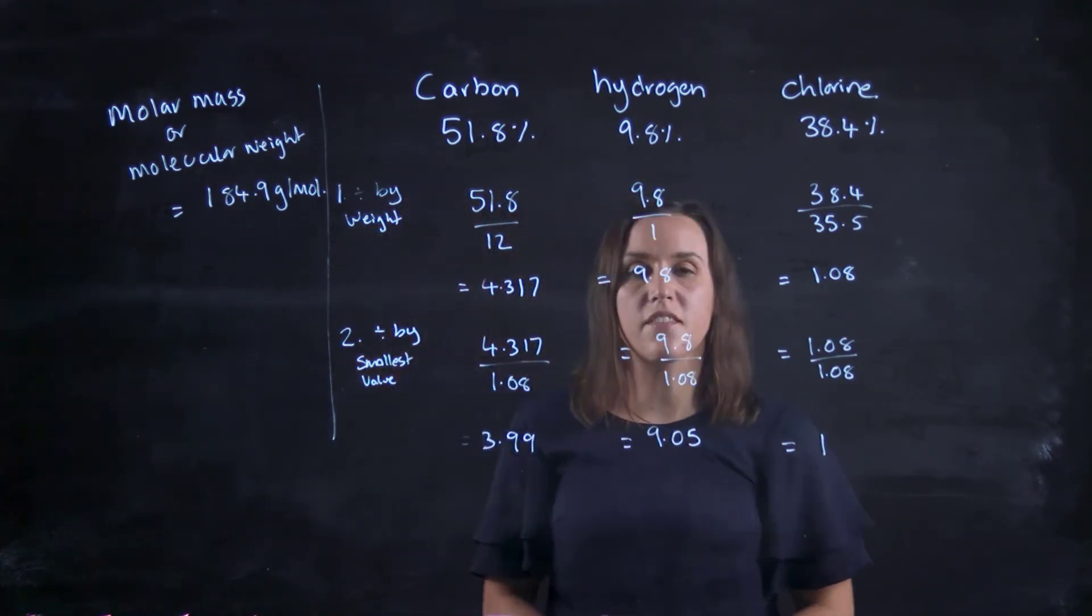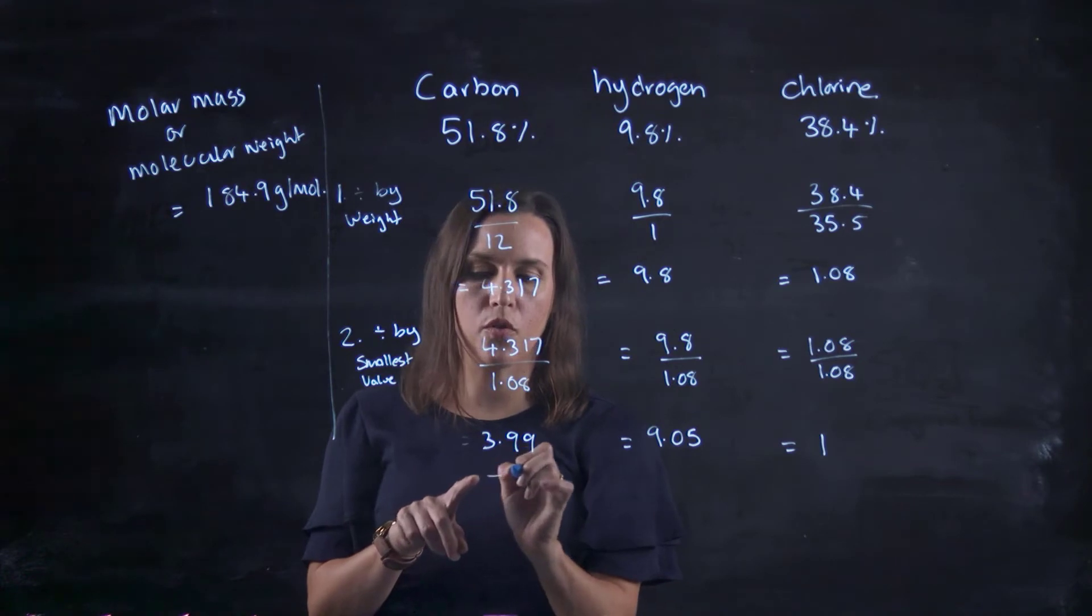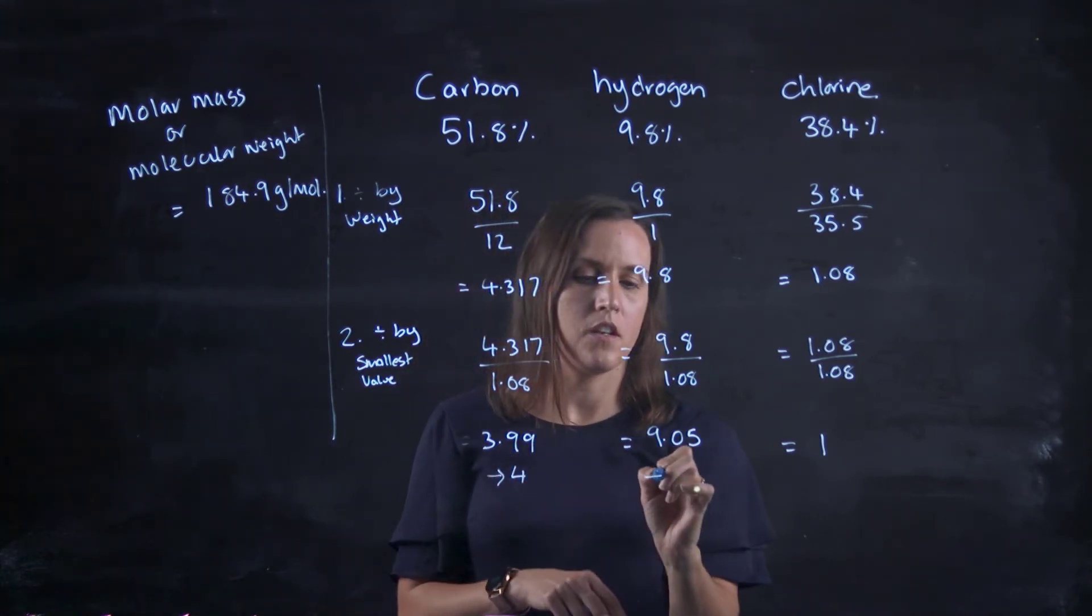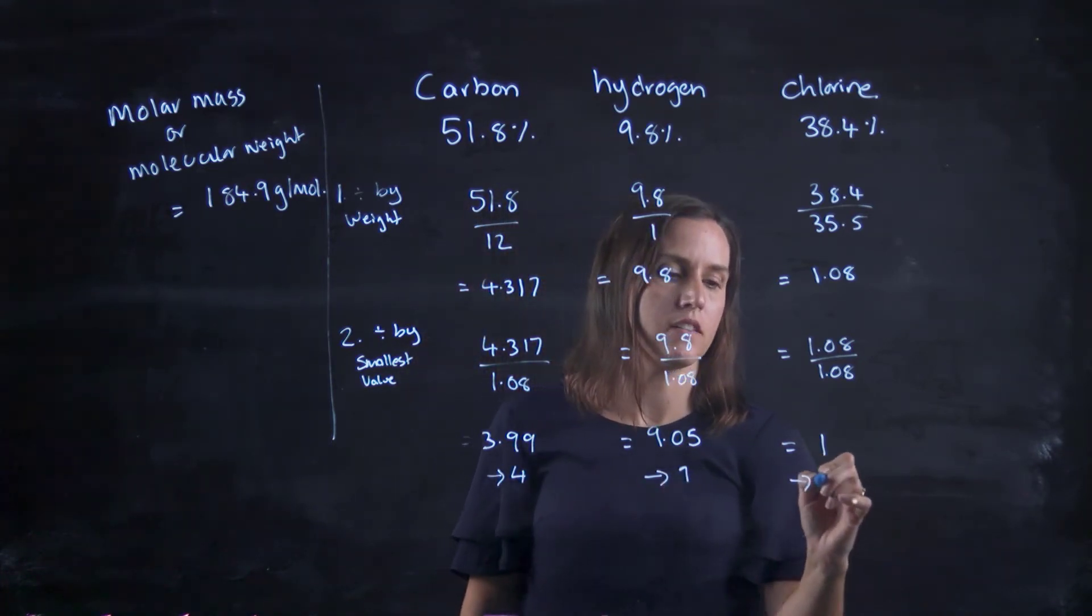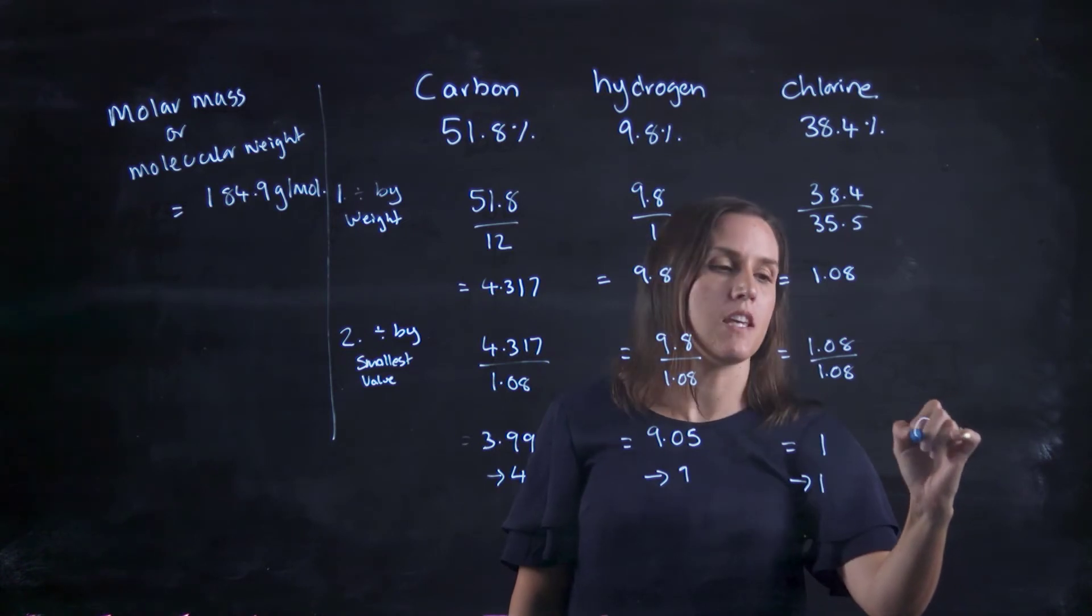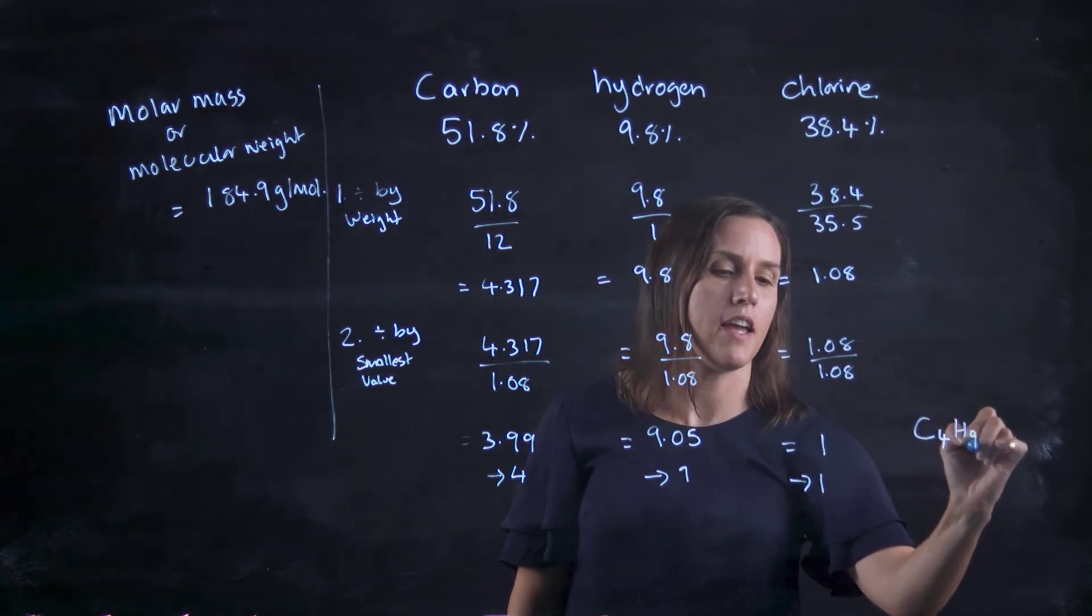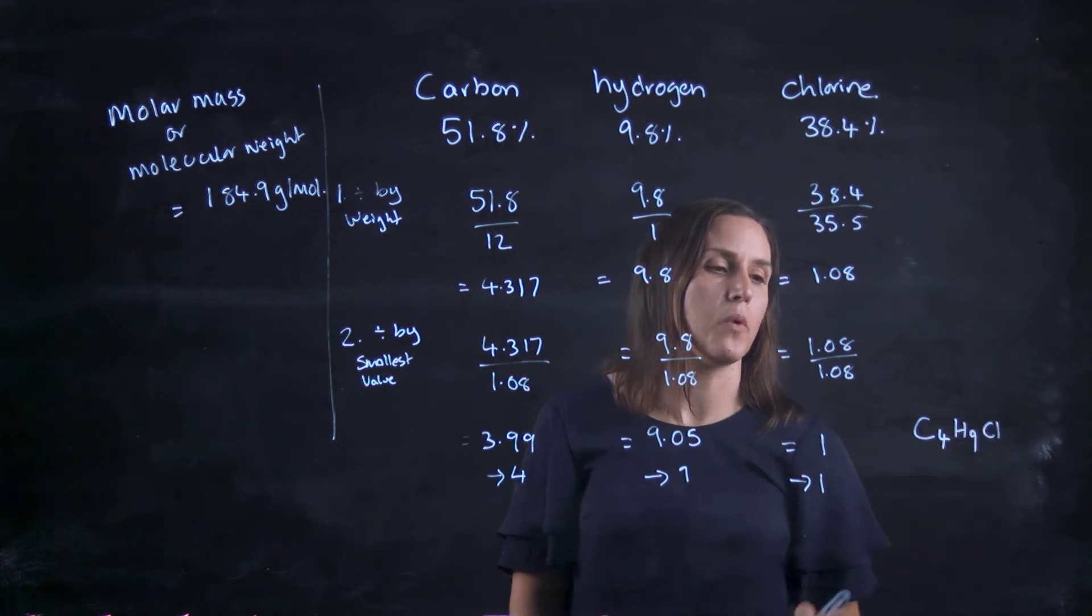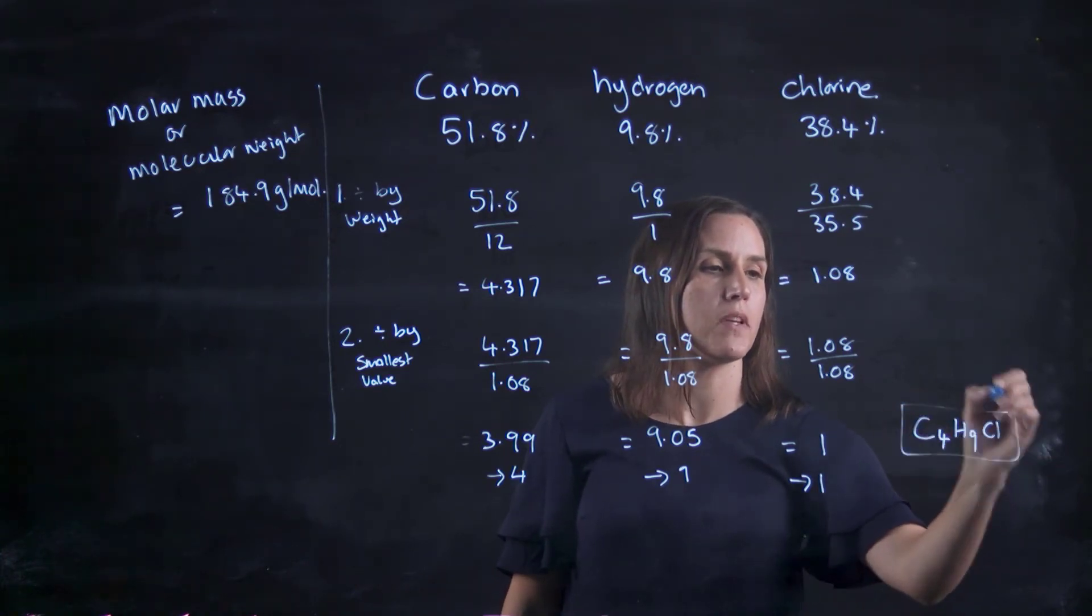So these are the values. I get basically 4, 9 and 1. So it's C4H9Cl1. So that's my empirical formula.